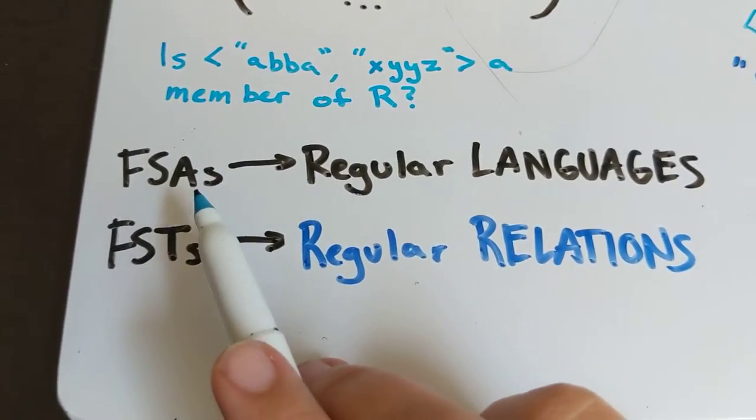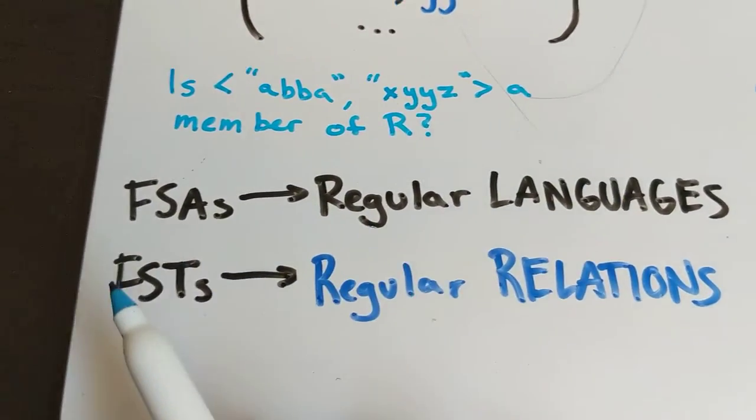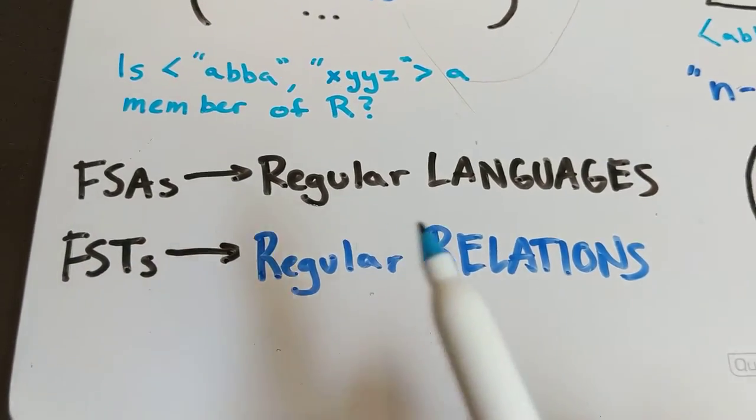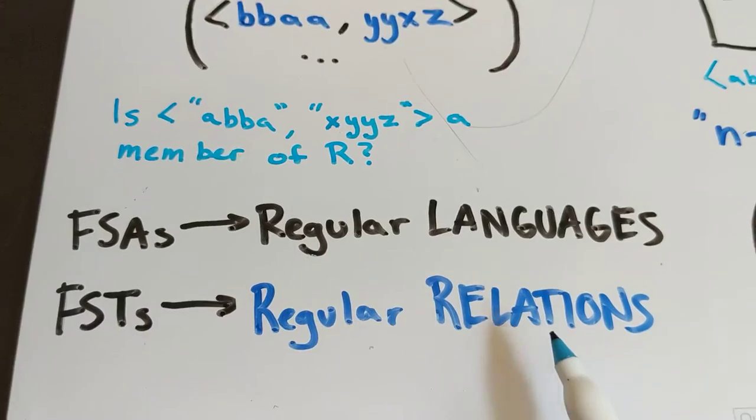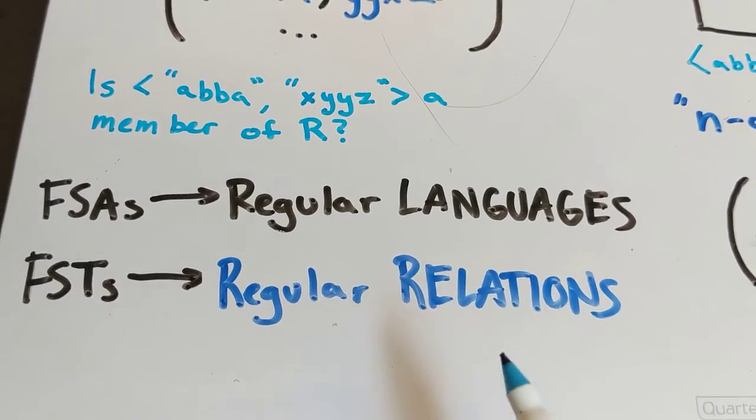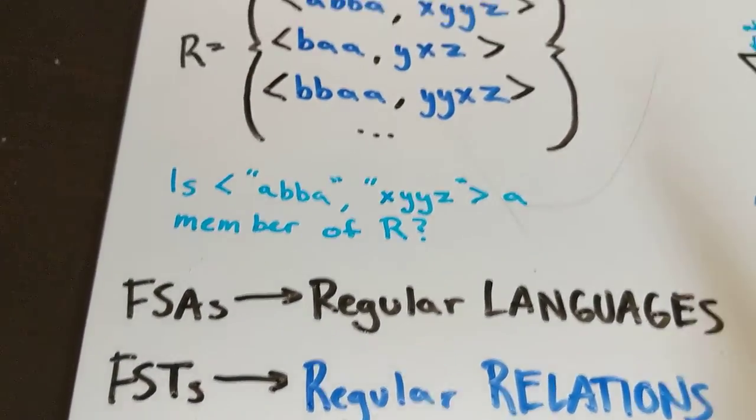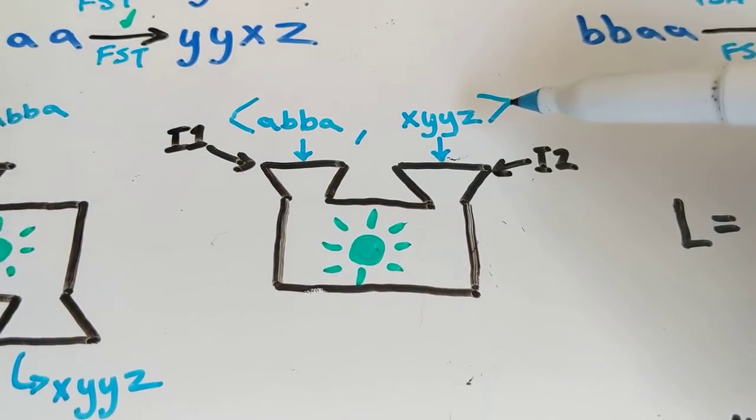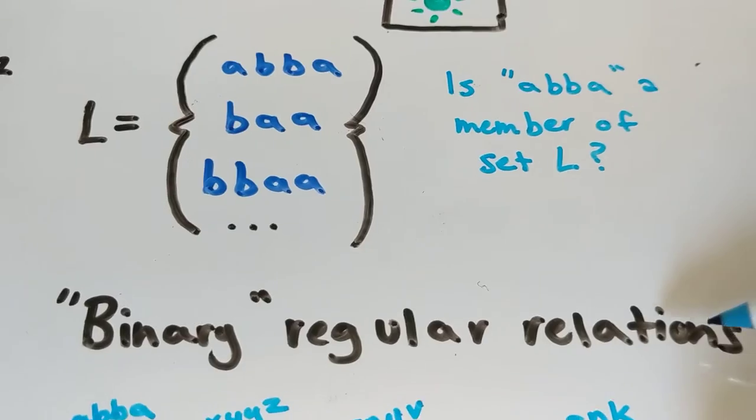What this means is that finite state automata recognize regular languages. FSTs, finite state transducers, recognize what are called regular relations. It's a relation between two expressions of regular languages and there's something that holds them together.